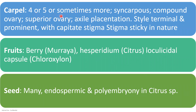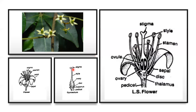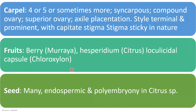Carpels are also 4 to 5 or sometimes more; they are syncarpous — forming a compound ovary. The ovary is superior, hypogynous flower as stated. Placentation is axile. Style is terminal and prominent with capitate stigma, which is sticky in nature. Fruits are berry in Murraya, hesperidium in citrus, and loculicidal capsule in Chloroxylon. Seeds are many, endospermic, and polyembryony is seen in citrus species — as in oranges and lemons, seeds are many.